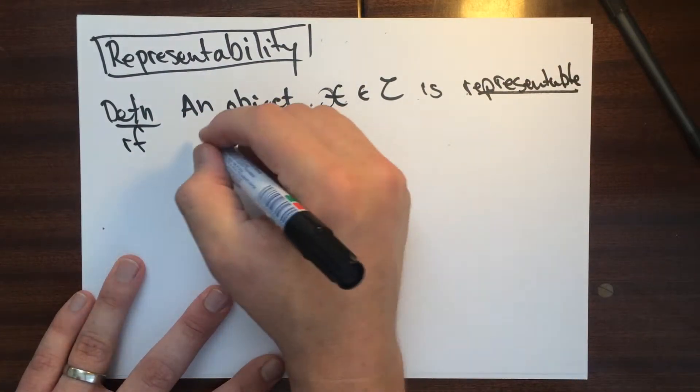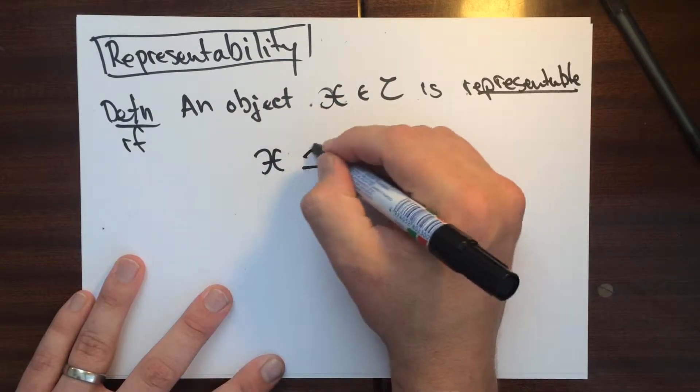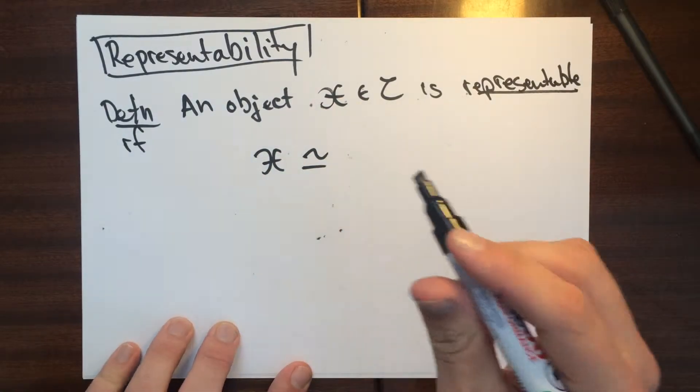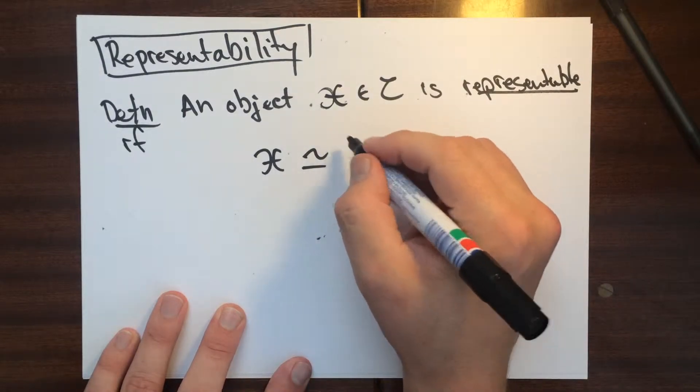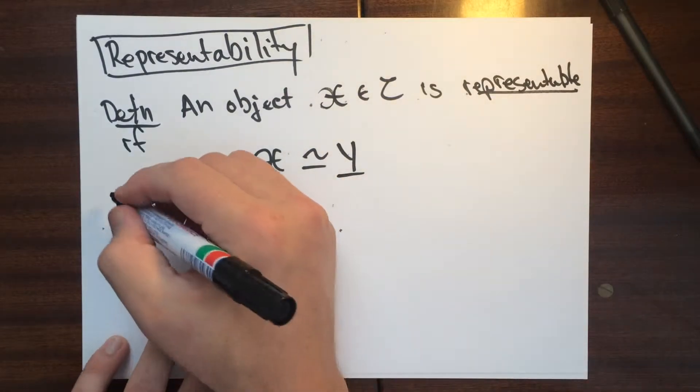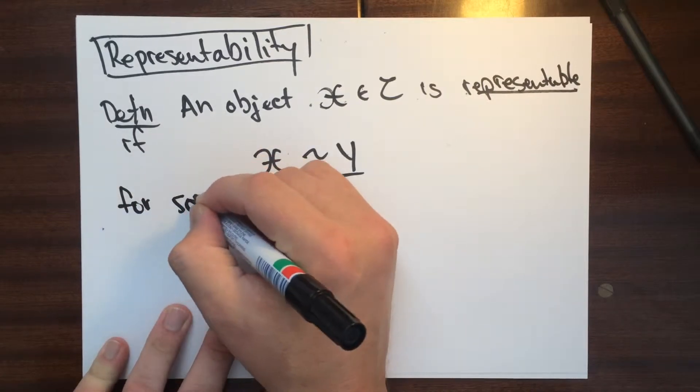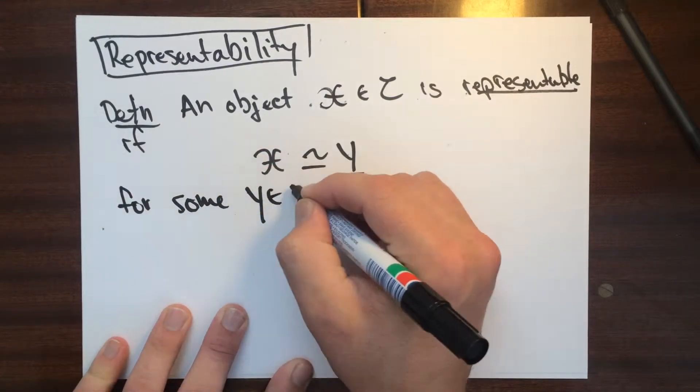X is isomorphic to Y underline for some Y in the category of schemes.